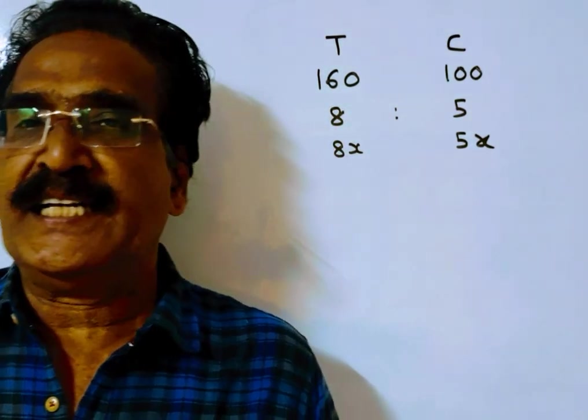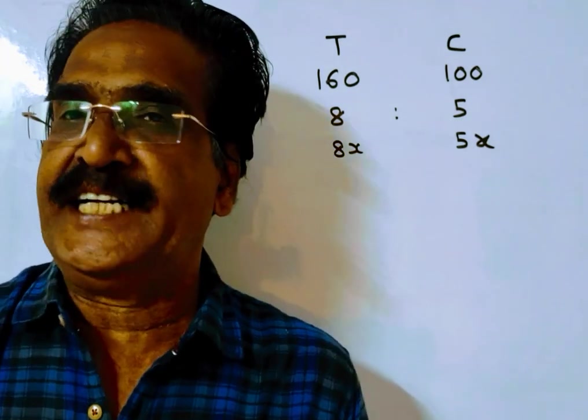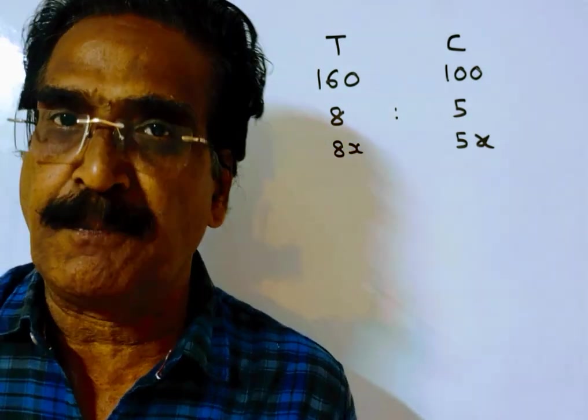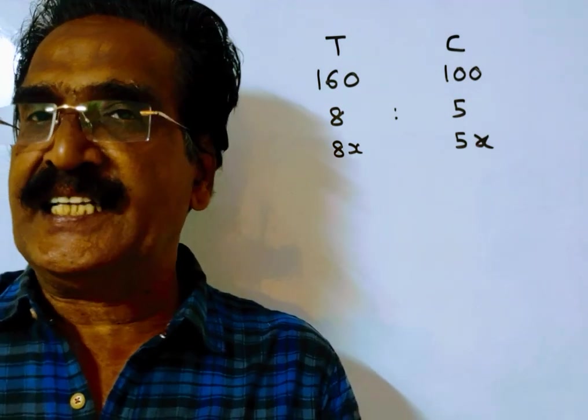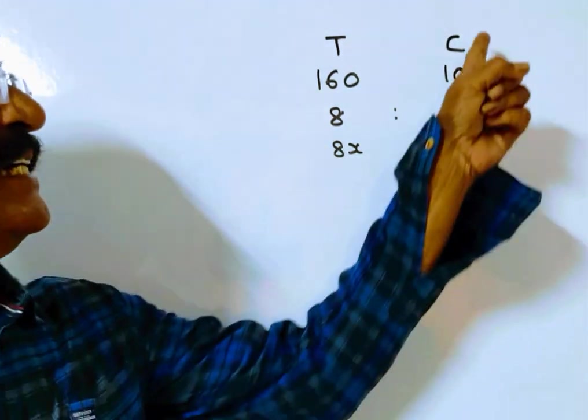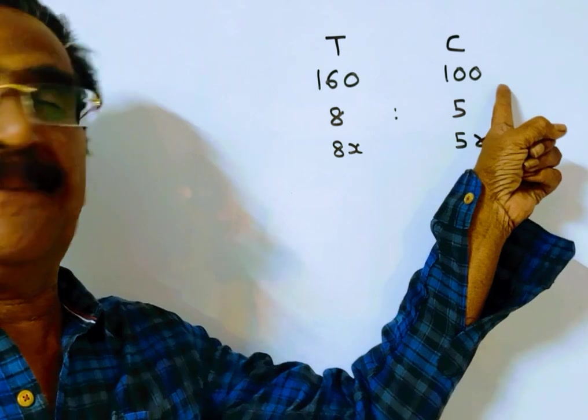Hi friends, good morning. Please look at the next problem in time and distance. The problem is given in the description box. A train is 60% faster than a car. That implies if the car is 100 kmph, the train is 160 kmph.